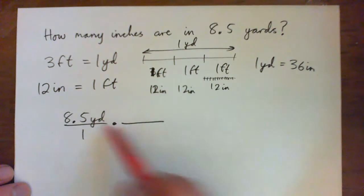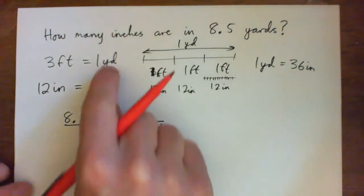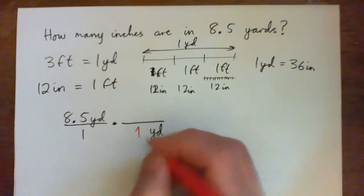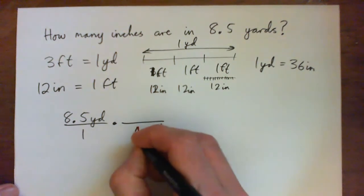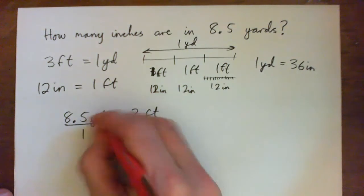So I want to convert to inches and I'm in yards, so I need the yards to cross cancel. And I find that I have one yard equals three feet. Okay, so now the yards have crossed canceled.